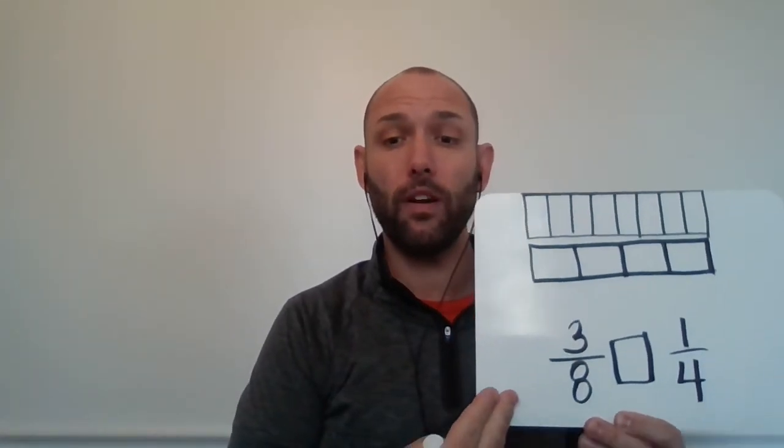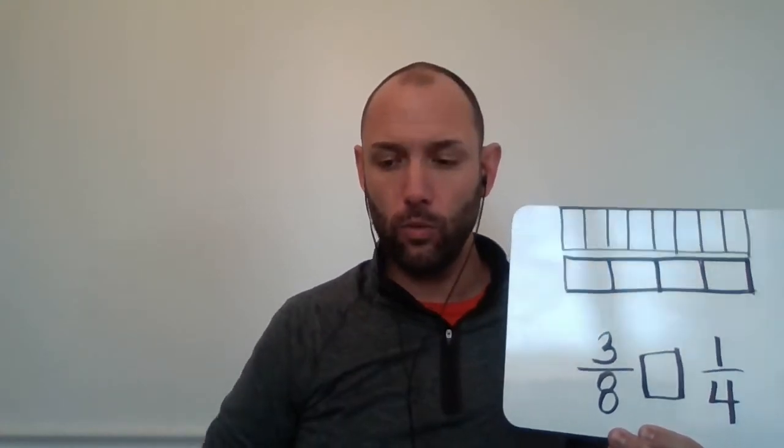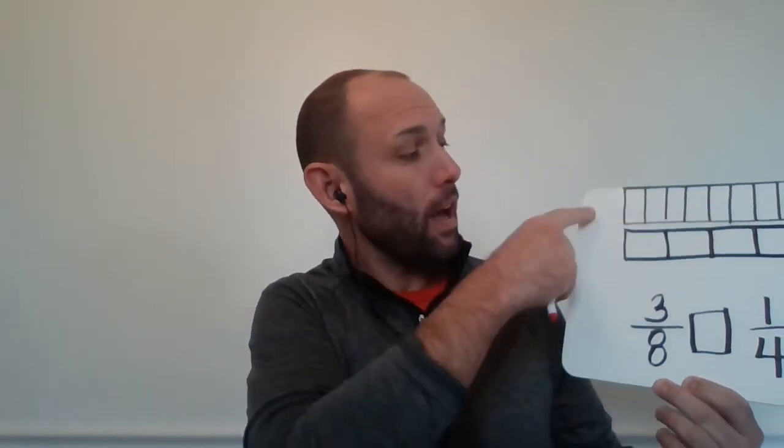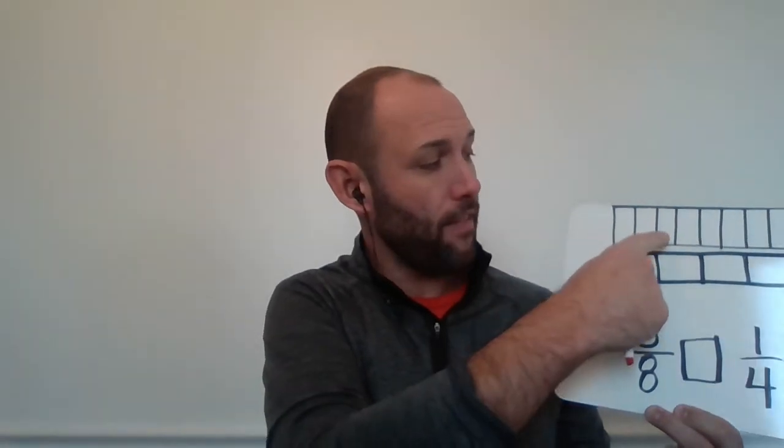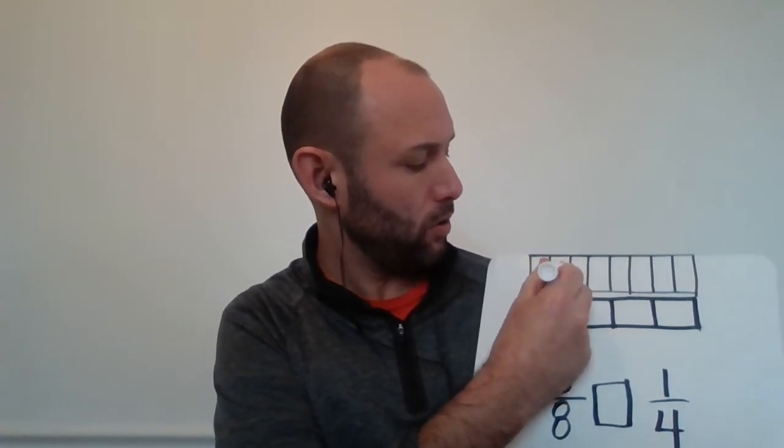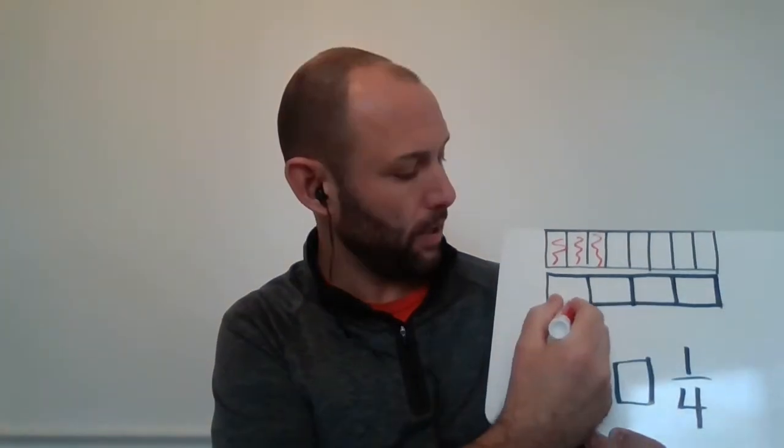So you've got to be able to figure out, is this greater than, is this less than, is this equal to? All right. So three eighths. That's going to be my top picture. And I know that because I have eight faces. Now, I needed three eighths. So I'm going to color that in. One, two, three. And then I had one fourth. I'm going to color that in. One.